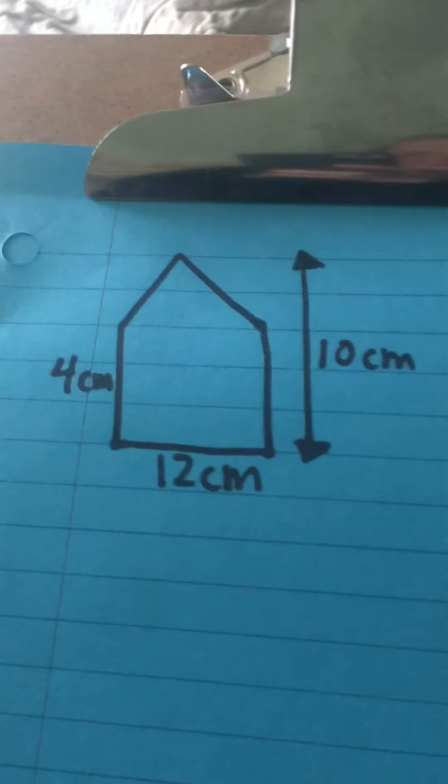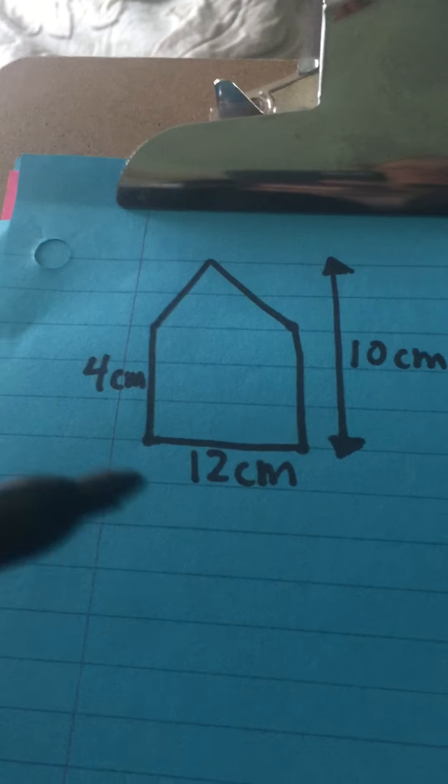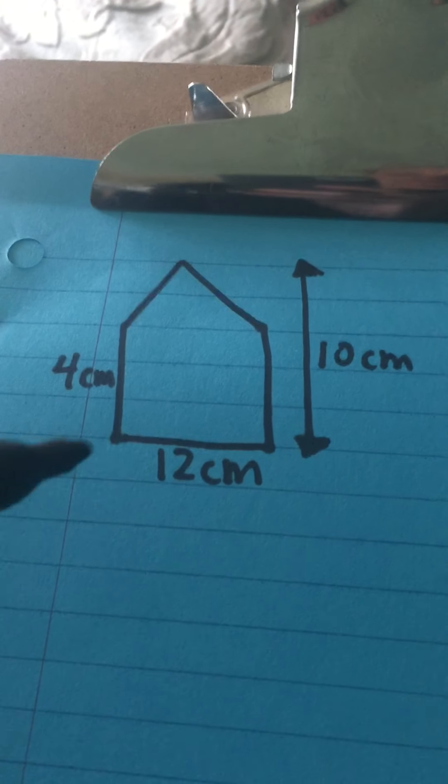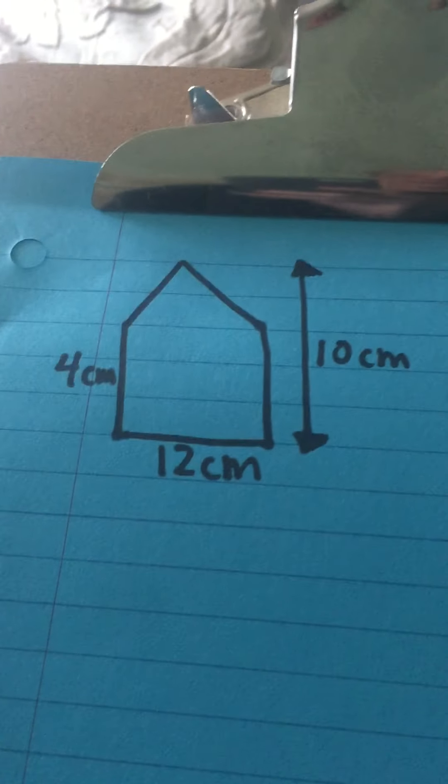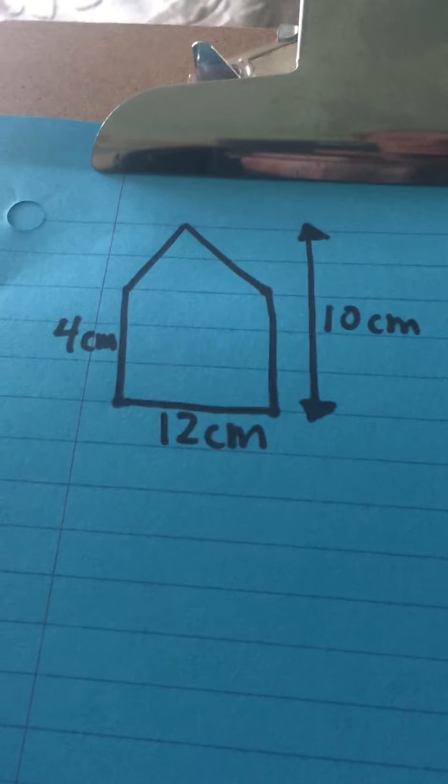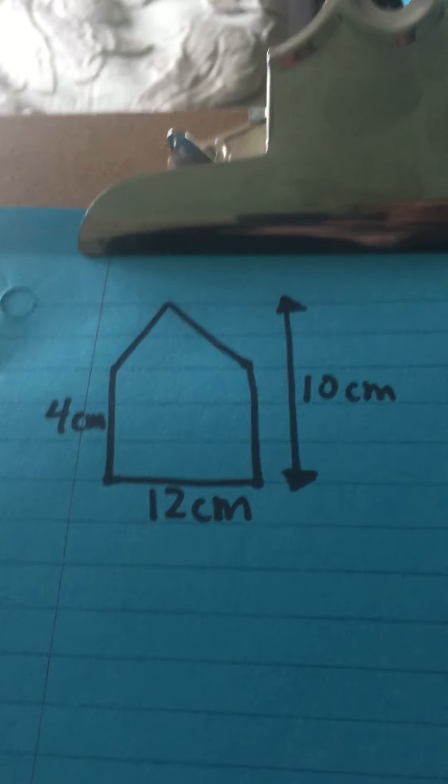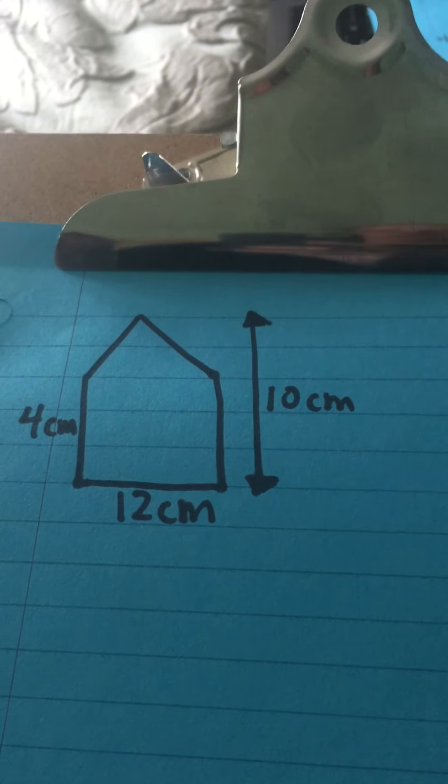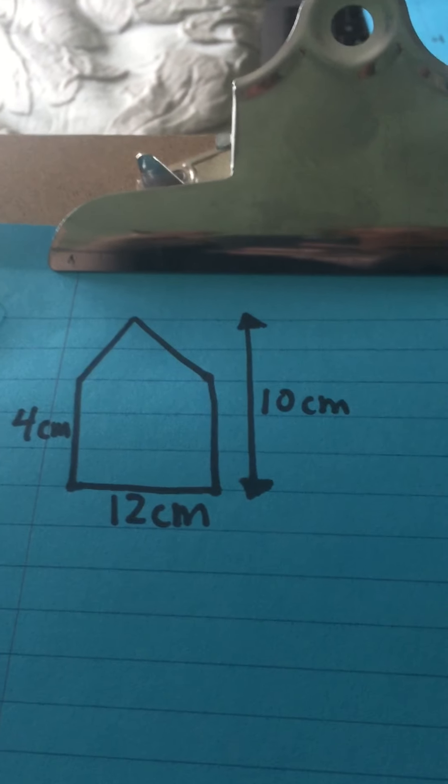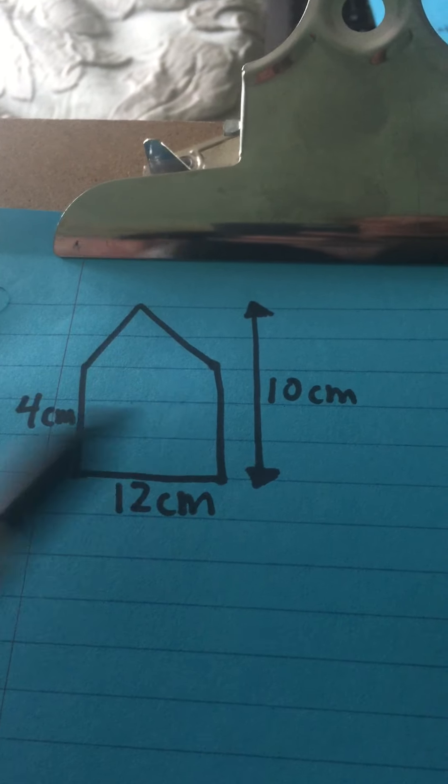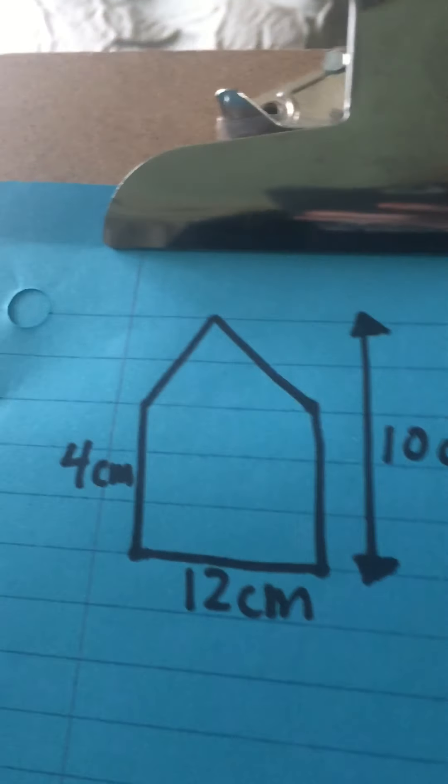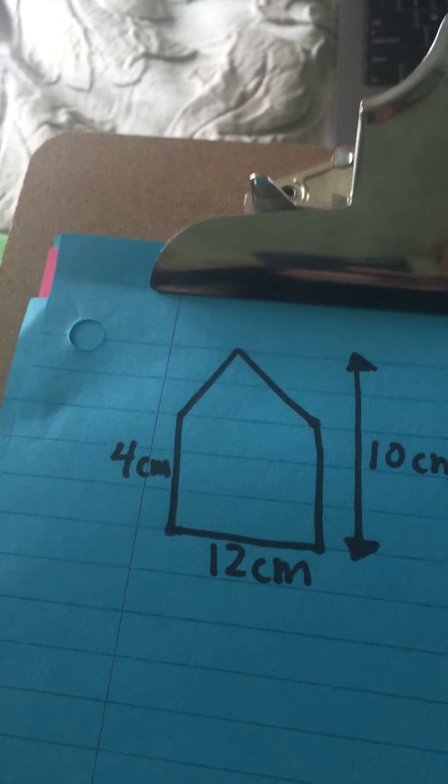Okay hello, today this is a video about how to find the area of an irregular shape. Yesterday we did irregular shapes that all included rectangles and squares. Today we're gonna throw in a triangle. When I see this, when I look at it, it kind of overwhelms me to find the area of this. It's all weird.